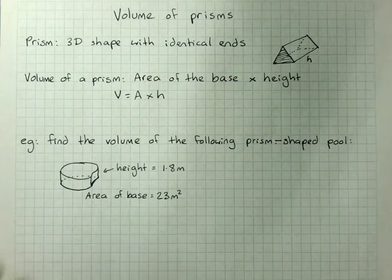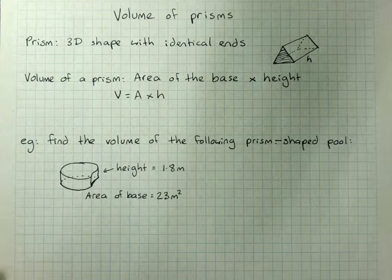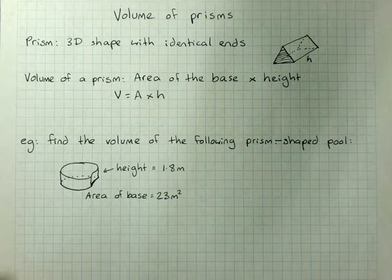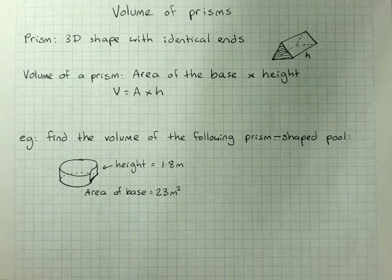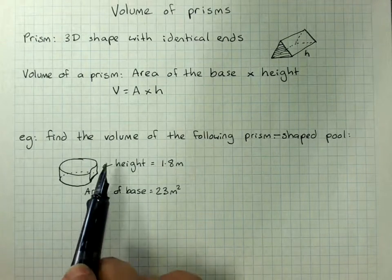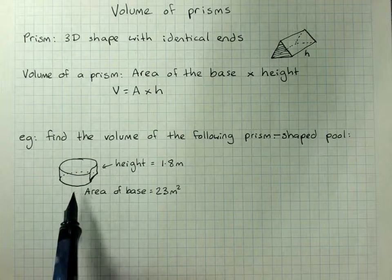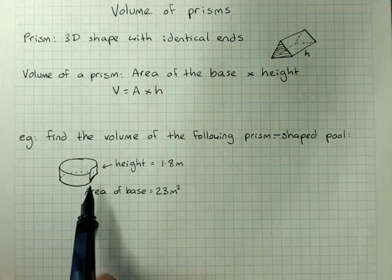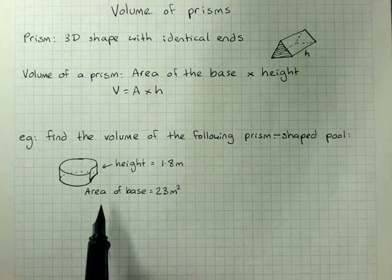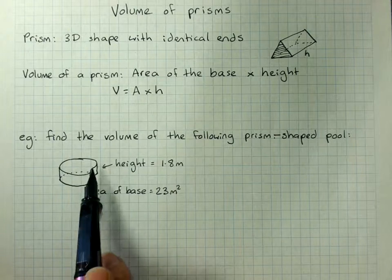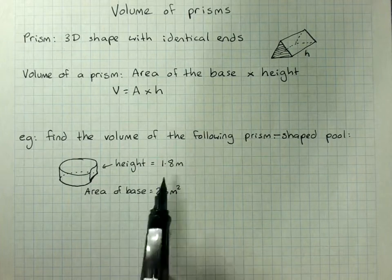So in a lot of your questions, they'll give you the area of the base and the height of the prism, and you'll just have to use that formula. So this is a wobbly shaped swimming pool. And they've given you the area of the base, it's 23 meters squared. And the height of the swimming pool is 1.8 meters,